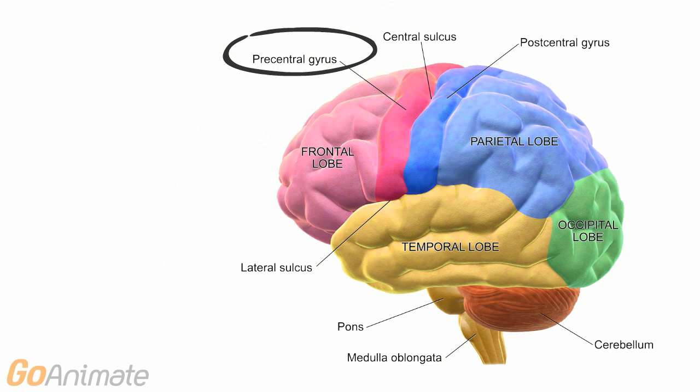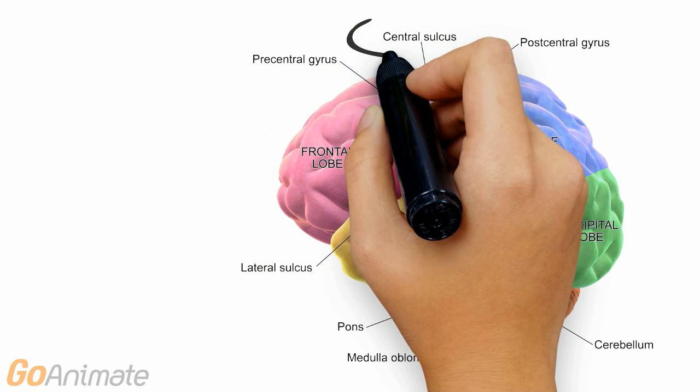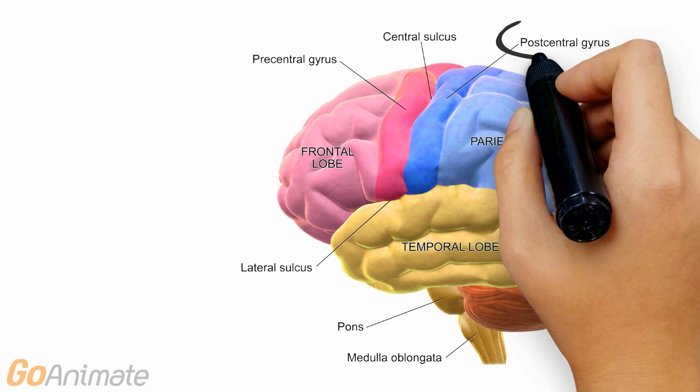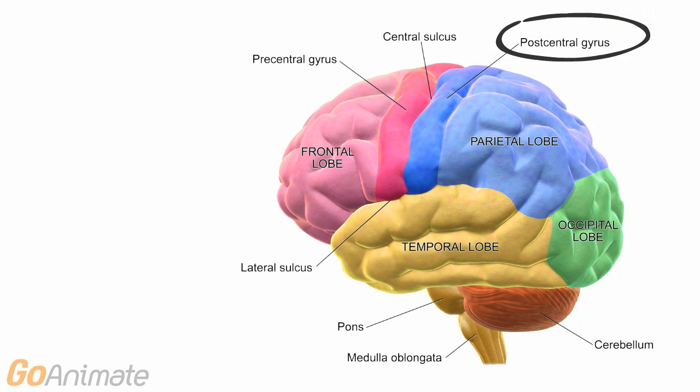The precentral gyrus on the frontal lobe is known as the primary motor area. The central sulcus divides the frontal and parietal lobes. The postcentral gyrus of the parietal lobe is known as the primary sensory area.